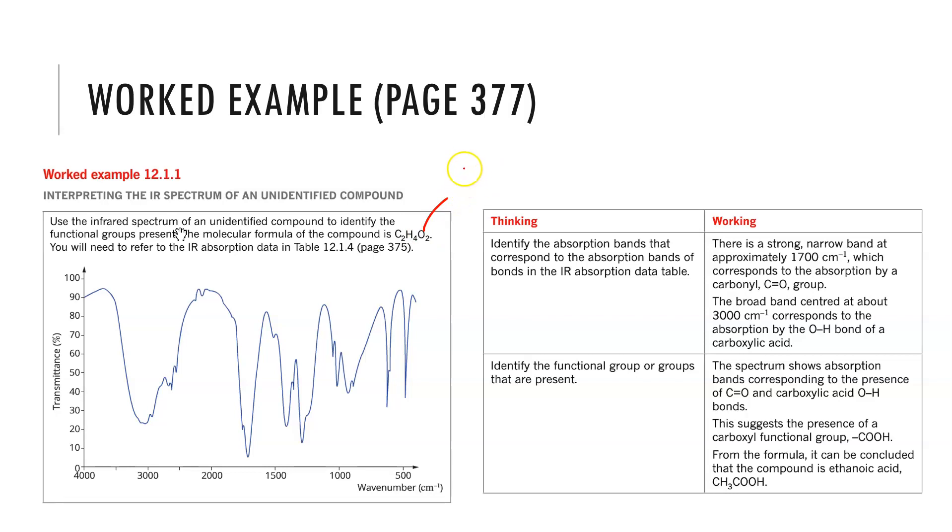On this spectrum the unidentified compound is C₂H₄O₂, which means as soon as I see O₂ I need to think of my functional groups that contain two oxygens. It could be a carboxylic acid, an ester, or two diols. If we go to the spectrum we can see a strong absorption at around 1700, which is our C=O, and we have this broad jagged peak which is the OH of the acid group. So this indicates it is a carboxylic acid molecule.